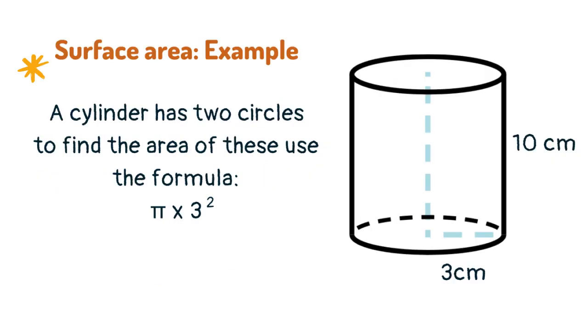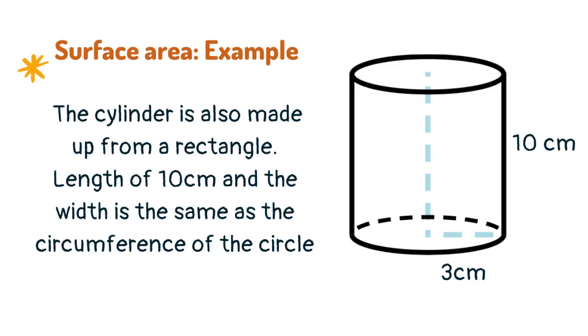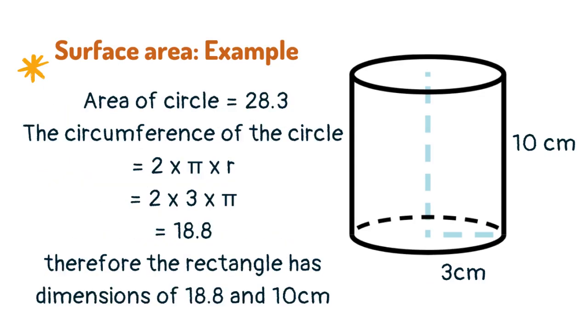A cylinder has 2 circles to find the area of these use the formula π times r squared. The cylinder is also made up from a rectangle. Length of 10 centimeters and the width is the same as the circumference of the circle. Therefore, the rectangle has dimensions of 18.8 and 10.